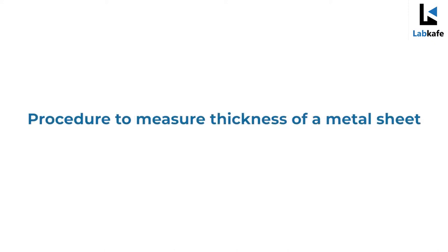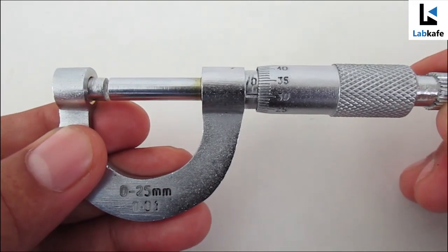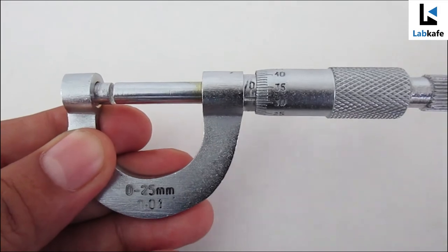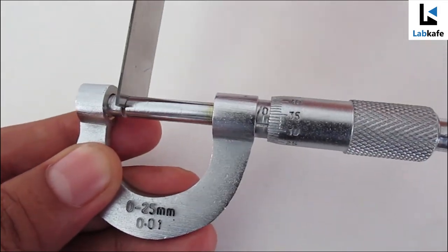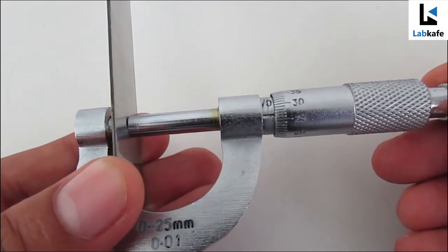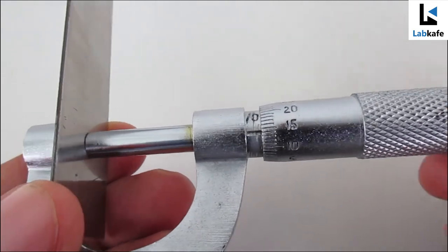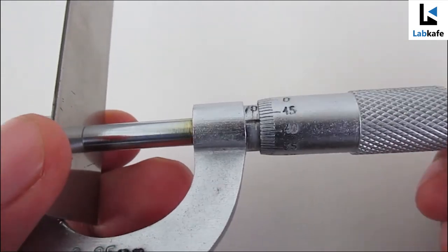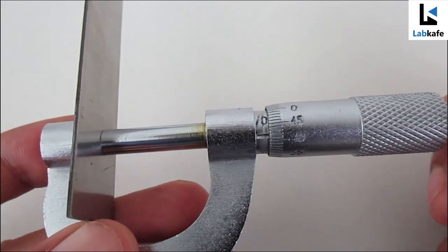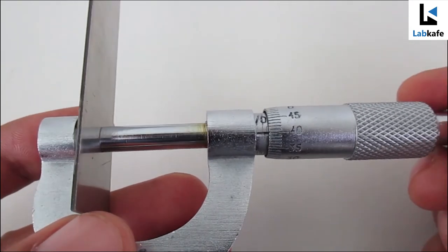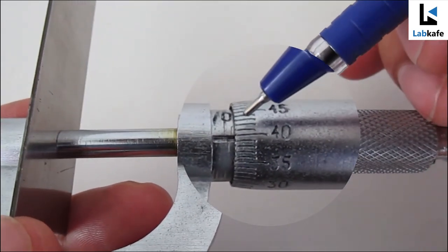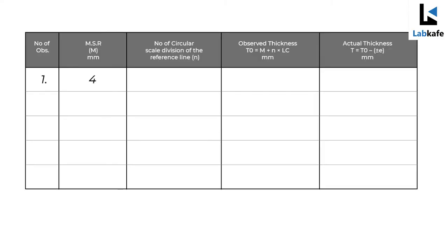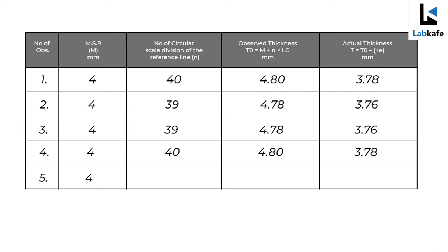Procedure to measure the thickness of a metal sheet: take the screw gauge and insert the metal sheet between the stud and spindle — I have taken a metal ruler as a sheet. Then gently rotate the ratchet until a click sound is heard. The main scale reading is 4 and the circular scale reading is 40. This is one set of data; we will collect three to four more sets in different places of the sheet.